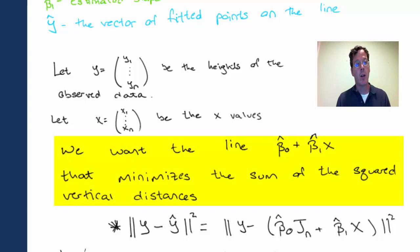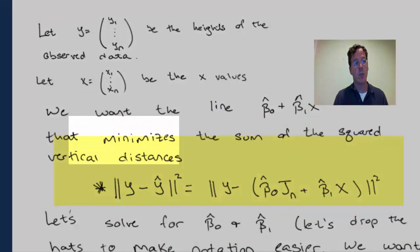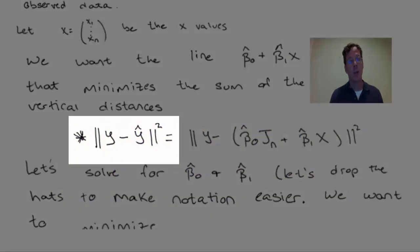And then we want to find the best line, beta 0-hat plus beta 1-hat x. In other words, we want the line that minimizes the sum of the squared vertical distances, which is nothing other than the squared Euclidean norm between the y, the observed y values,